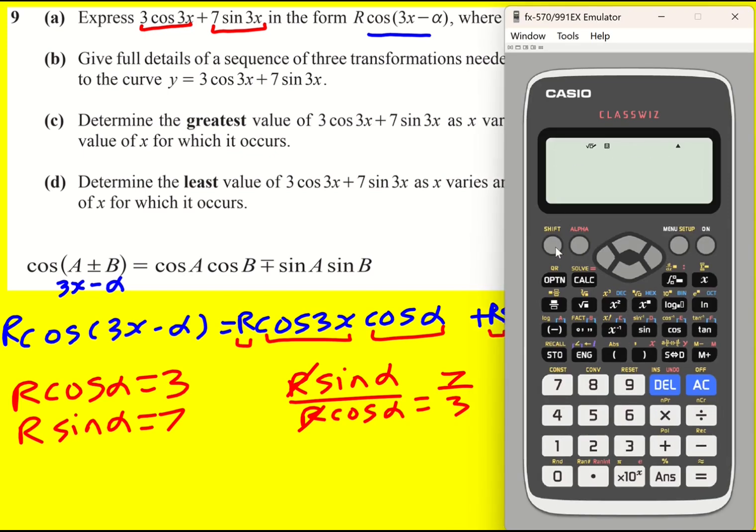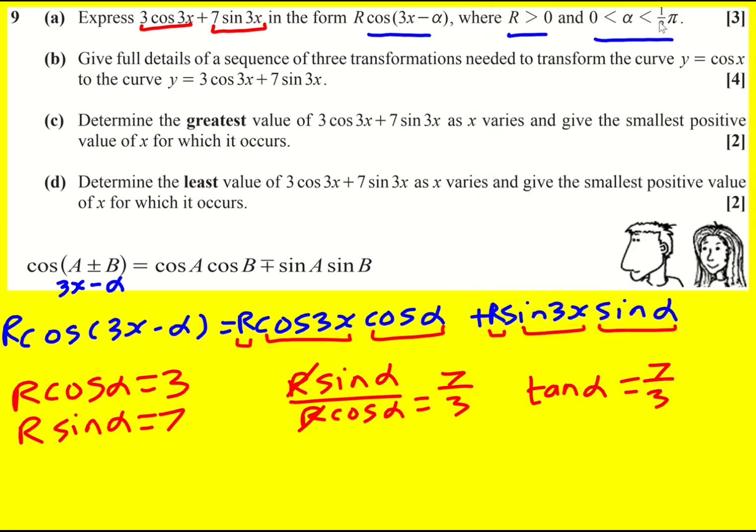And put that in the calculator. Make sure you've got it in radians. Okay, if you get like a large number, it means you've done it wrong. You probably put it in degrees. 7 over 3, 1.1659.